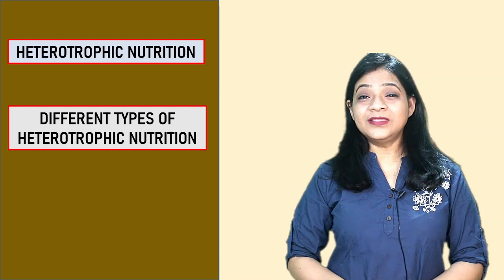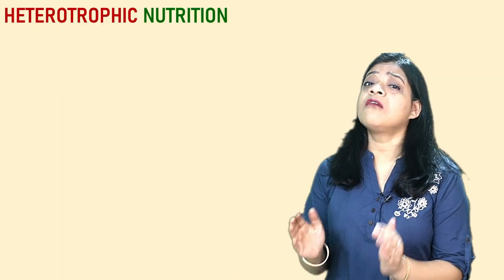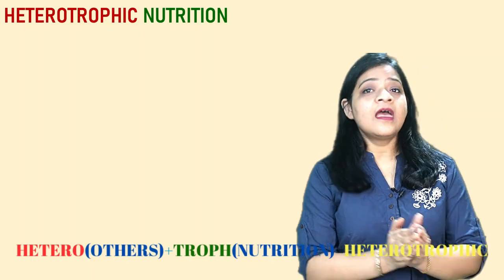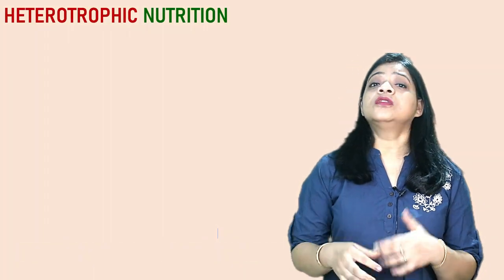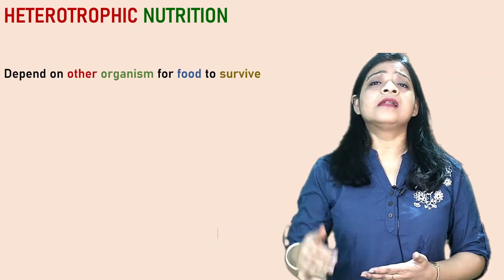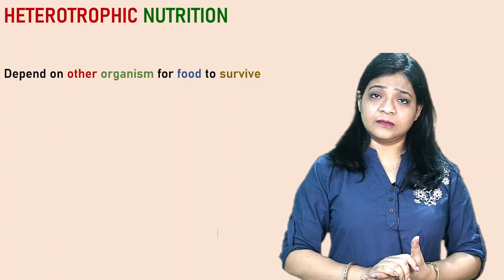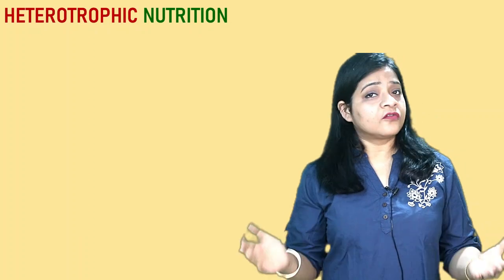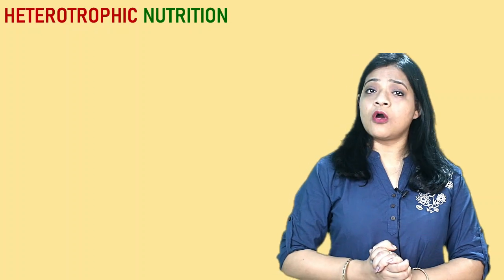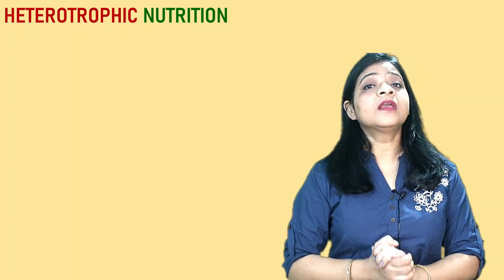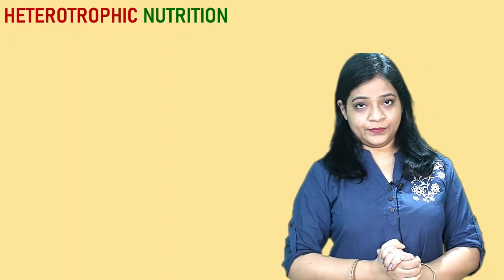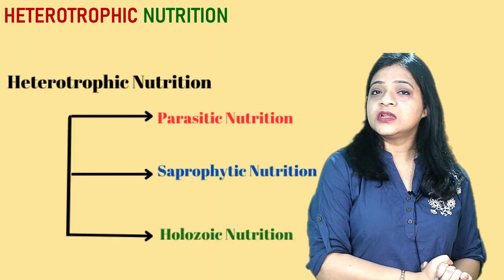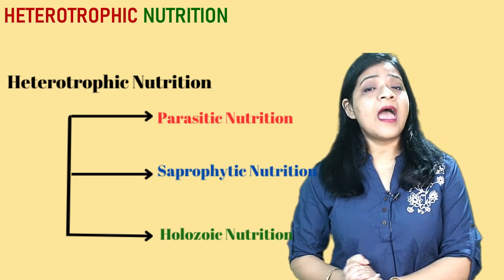Heterotrophic nutrition can be split into 'hetero' meaning others, and 'trophic' meaning nutrition. The process by which living organisms are dependent on other organisms for their survival is known as heterotrophic nutrition. In heterotrophic nutrition, the living organisms cannot prepare their own food because of the absence of chlorophyll in them. Heterotrophic nutrition is further divided into parasitic nutrition, saprophytic nutrition, and holozoic nutrition.